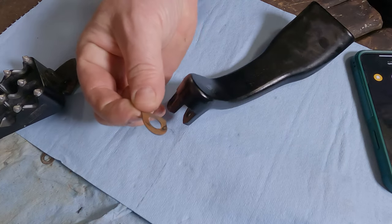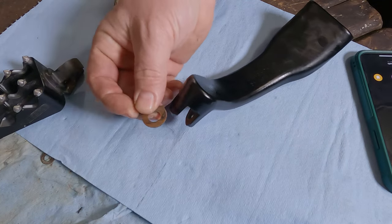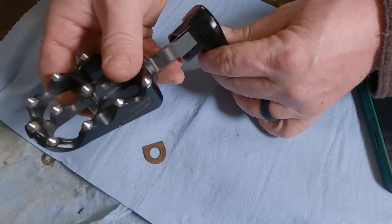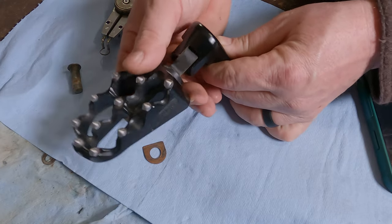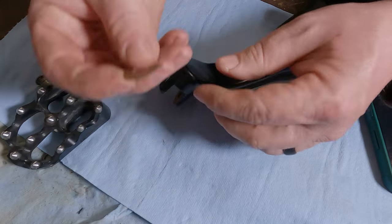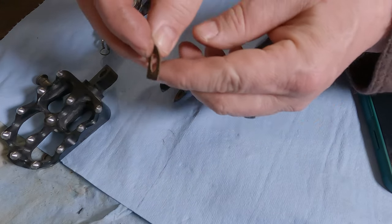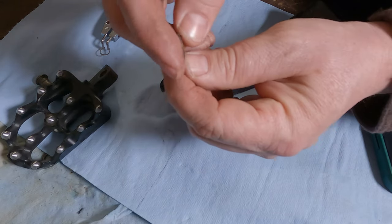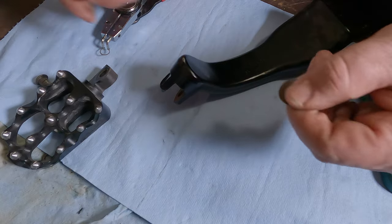Now you'll notice this washer just fell out of here. What this washer does is it keeps the foot peg from doing this the whole time as the bike's idling. It's just a little spring tab. You'll notice it's got like a little warp to it. It's really just kind of a spring to hold tension on that.